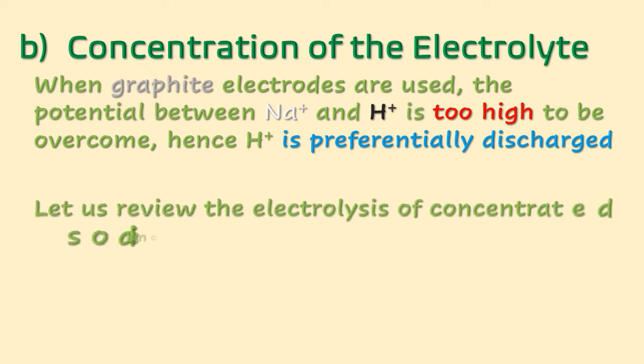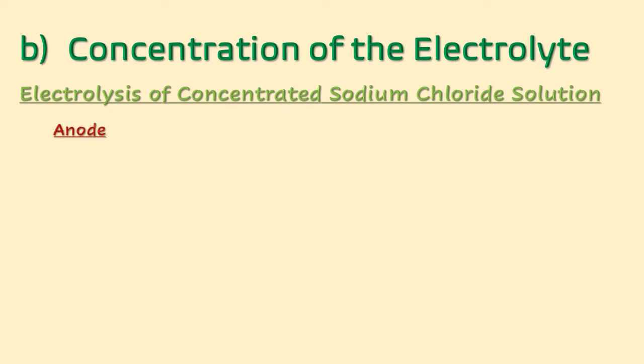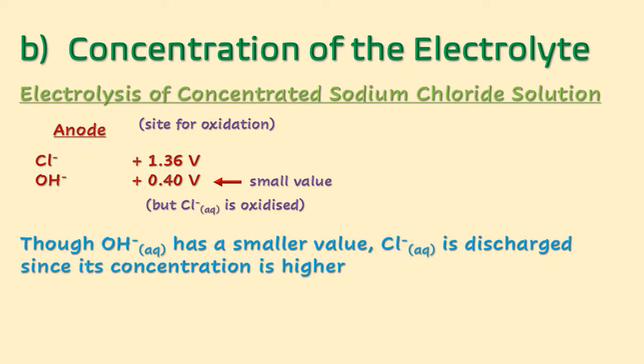Let us review the electrolysis of concentrated sodium chloride solution. The anode is our site for oxidation. Here we have chloride ions and hydroxide ions — chloride ions provided by the sodium chloride, and hydroxide ions provided by water. The small value at the anode indicates the strongest reducing agent, and a strong reducing agent is most easily oxidized. We would have expected hydroxide ions to be oxidized, but because of the effect of concentration, chloride ions are preferentially discharged at the anode.